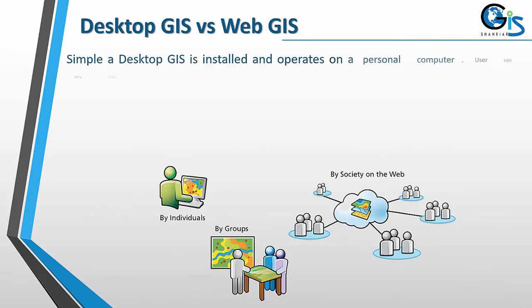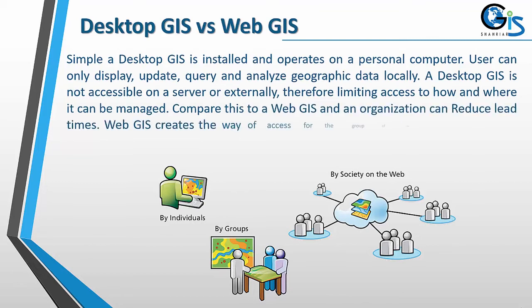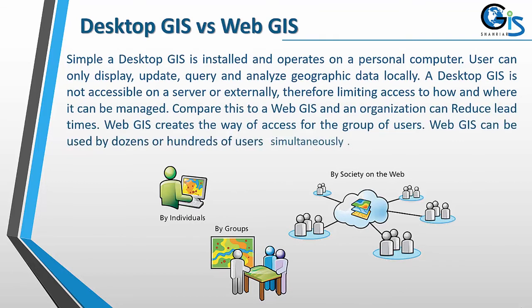Desktop GIS versus Web GIS: a desktop GIS is installed and operates on a personal computer. Users can only display, update, query, and analyze geographic data locally. A desktop GIS is not accessible on a server or externally, limiting access to how and where it can be managed. In contrast, Web GIS allows an organization to reduce lead times, creates access for groups of users, and can be used by dozens or hundreds of users simultaneously.